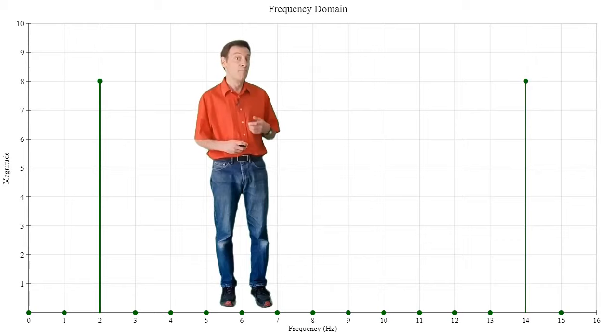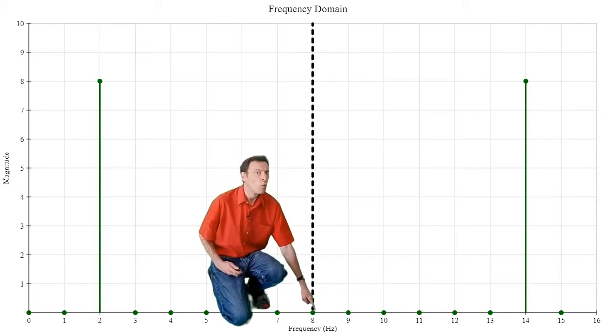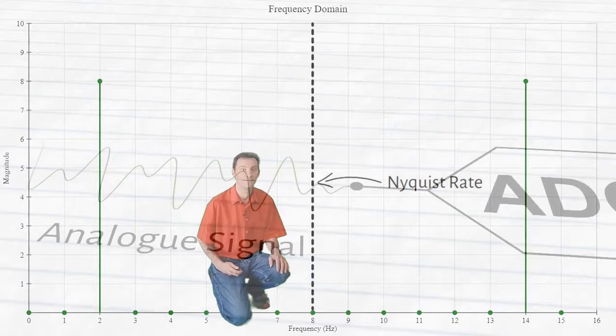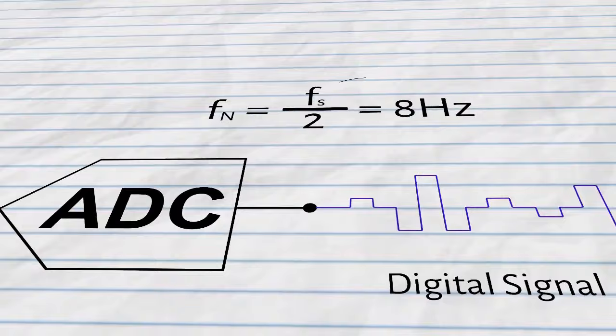This is the reason why the magnitude output of the FFT is symmetrical about this center frequency, which is a very special frequency called the Nyquist rate. The Nyquist rate is always half the sampling rate, 8Hz for our signal, which was sampled at 16Hz.